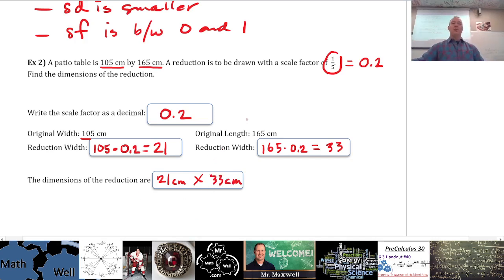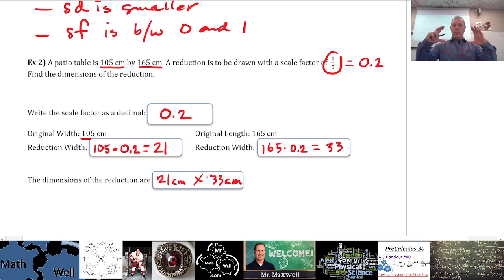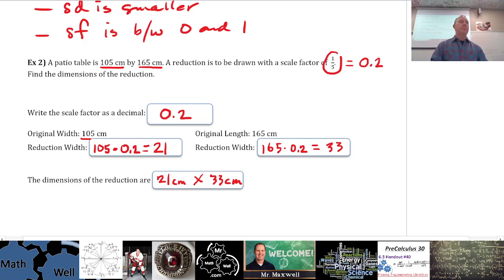The patio table appears to be a rectangle. The original was 105 cm by 165 cm, and the reduced model is 21 cm by 33 cm.